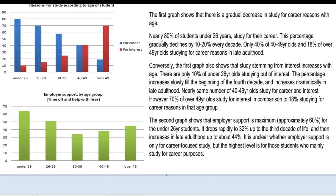They don't tell us if this is the biggest number. This is just nearly 80% of students under 26 years old, but we don't know if this is a maximum and whether this is a minimum. We just know that there's a decline, but it's not clearly stated if this 80% is the maximum and whether this 18% is the minimum. So if you're going to be describing the data, be sure to indicate whether this is a maximum or a minimum.